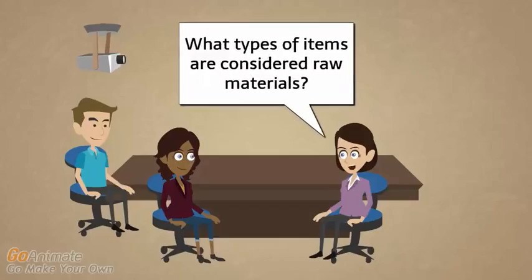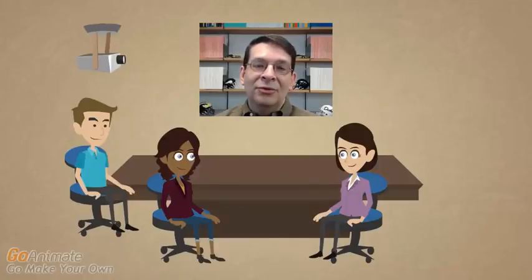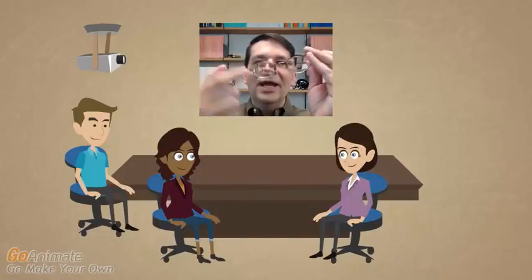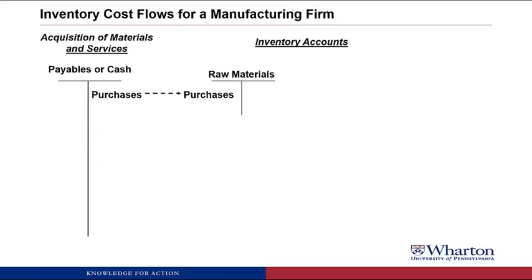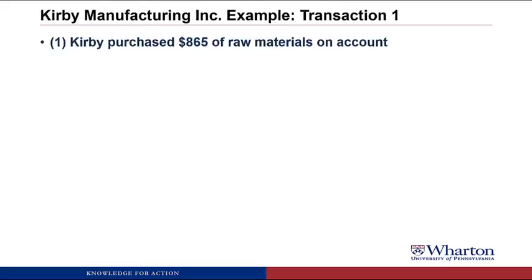What types of items are considered raw materials? Raw materials are any materials that go into producing the product. So if we were making eyeglasses, it would be the metal for the frames, glass for the lenses, the screws, little nose pads — basically anything you put together to make the final product. To make our walkthrough of this flow chart more interesting, I want to go through an example of a company with real numbers. In the first transaction, Kirby Manufacturing Incorporated purchased $865 of raw materials on account. Why don't you try to do the journal entry, and then I'll come back and give you the answer.